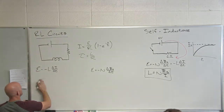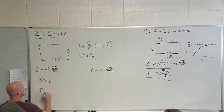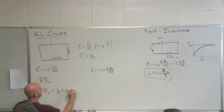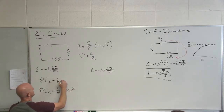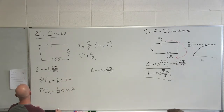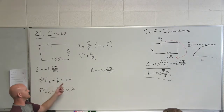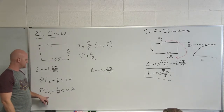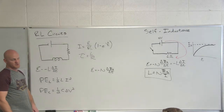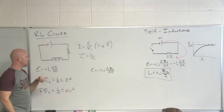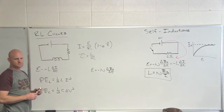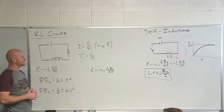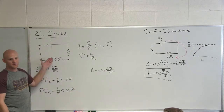Now let's talk about the potential energy stored in an inductor. To differentiate: for a capacitor the formula was one-half C times V squared. For an inductor it follows the same fashion — one-half L times I squared. We store energy in a capacitor via separation of charges. In an inductor, as current through the coil builds up, a magnetic field builds up, and that's where the energy is stored.